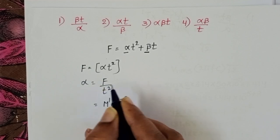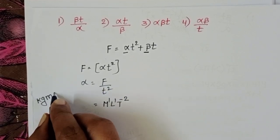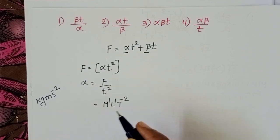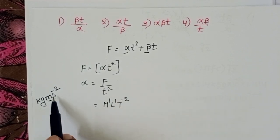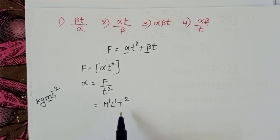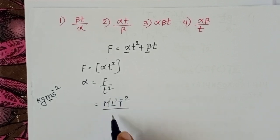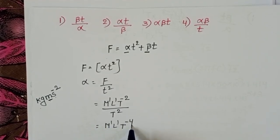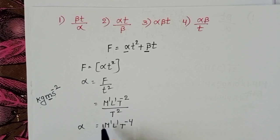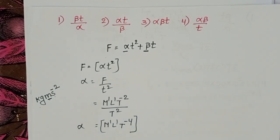We know the SI unit of force is Newton. Newton equals kg·m per second squared, so dimensions of force are M power 1, L power 1, T power minus 2. Dividing by t squared, which is T power 2, the dimensions of alpha become M power 1, L power 1, T power minus 4.